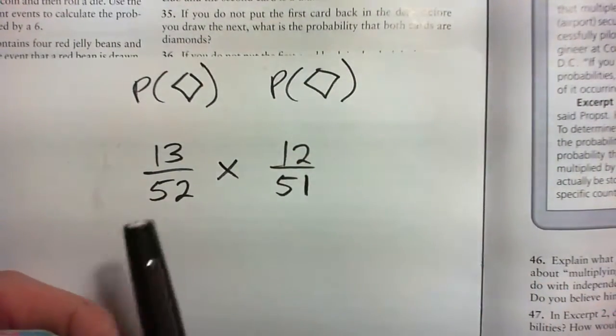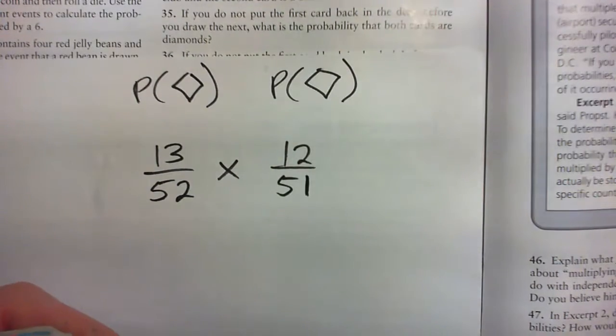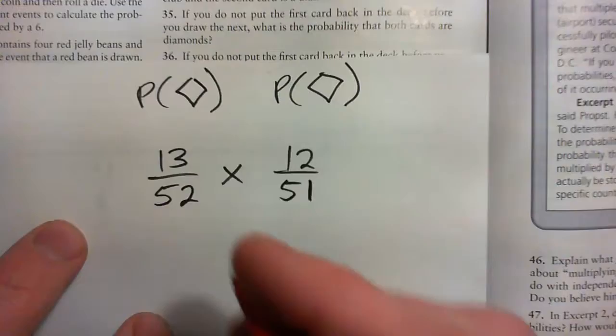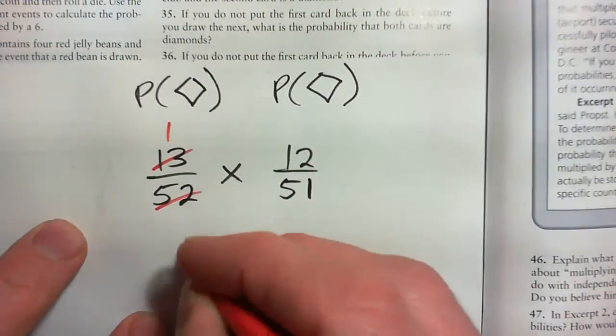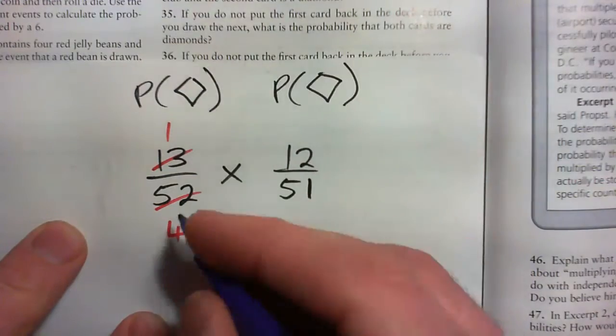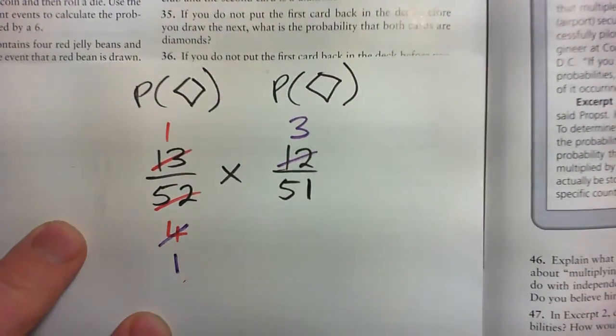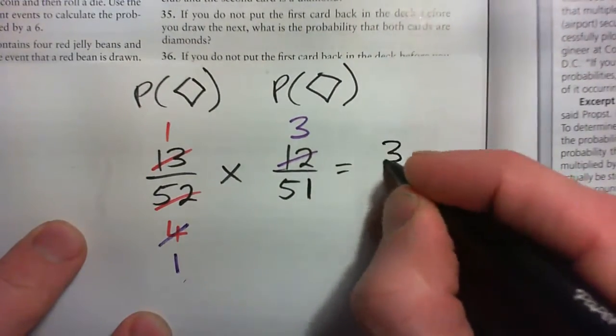And so these two events need to happen one after the other, so we multiply them to get the chances of both occurring. 13 into itself goes once, 13 into that goes four times. You can also cross-cancel the 4 with the 12. 4 into 4 goes once, 4 into 12 goes three times. And the answer to this is 3 out of 51.